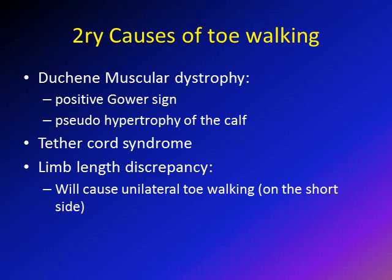Other causes of toe walking include Duchenne muscular dystrophy. Assessment of the child with Duchenne muscular dystrophy will show a positive Gower sign. When you ask the child to stand up from a squatting position, he will climb on himself. Also, there is pseudo-hypertrophy of the calf due to invasion by fibrous tissue of the muscles.